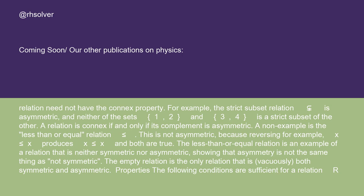For example, the strict subset relation (⊊) is asymmetric, and neither of the sets {1, 2} and {3, 4} is a strict subset of the other. A relation is connex if and only if its complement is asymmetric.